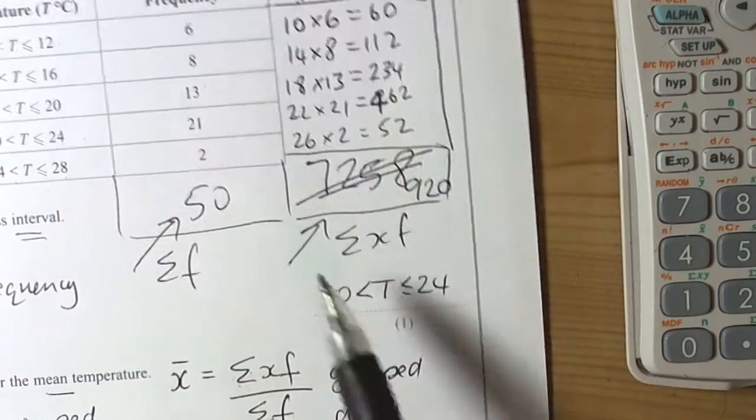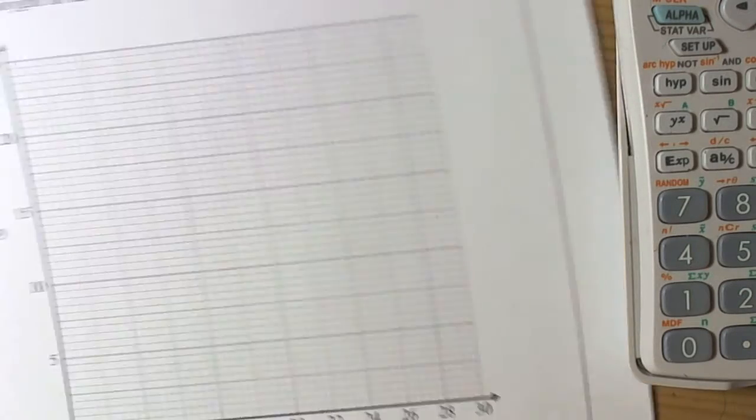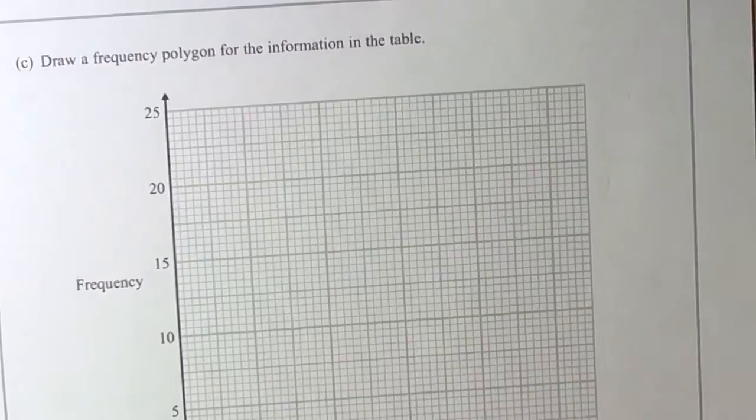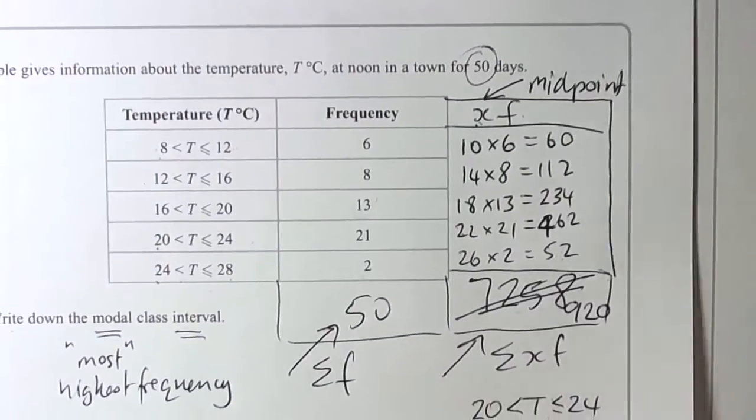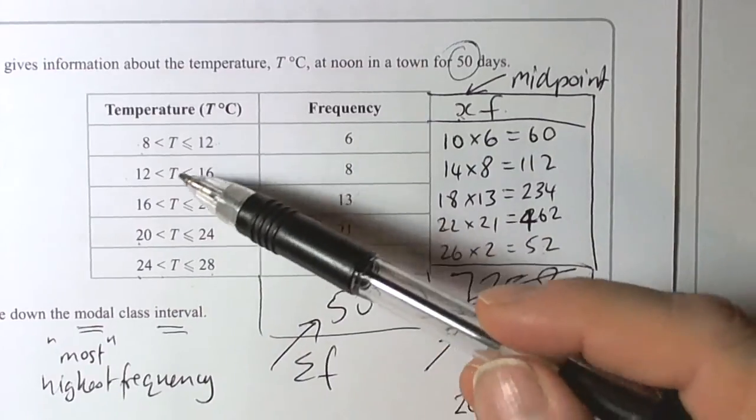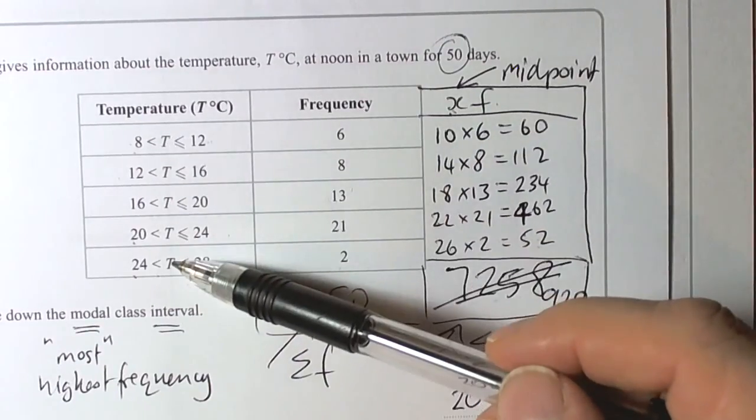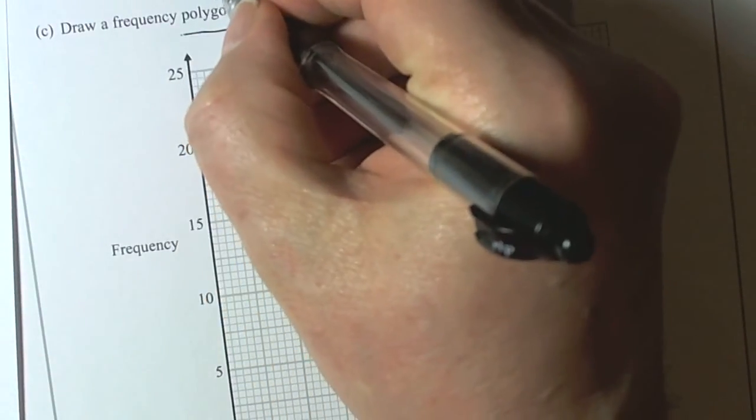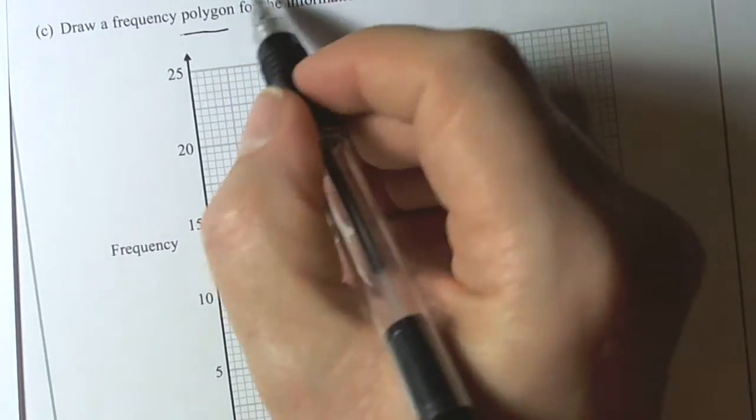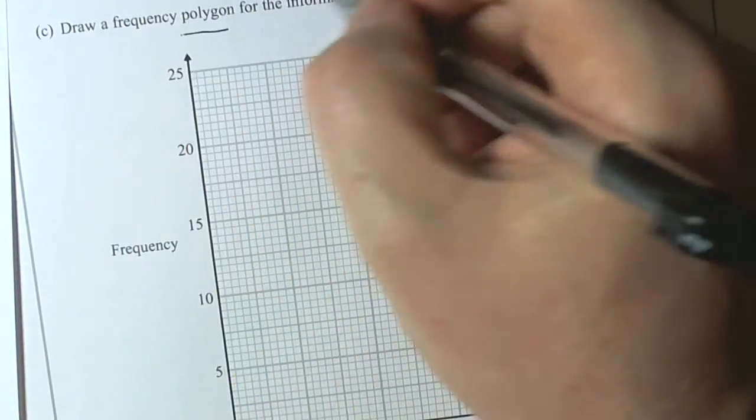The question goes on to talk about drawing a frequency polygon for all the information in the table. So what we need to remember about a frequency polygon is that we use the middle of the intervals plotted against the frequencies, and the word polygon implies that we're going to be drawing something that has straight lines and we're using the midpoint.